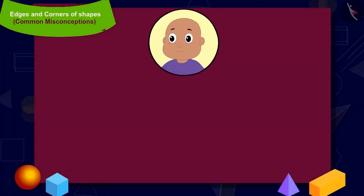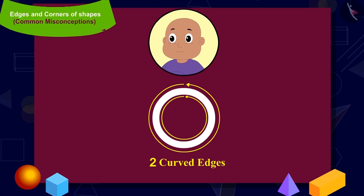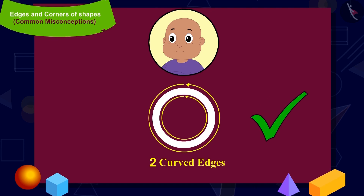Let us have a look at Bablu's shape. Can you look out for the edges in Bablu's shape? These are the two curved edges in Bablu's shape. Can you look for the corners in this shape? In Bablu's shape, the curved edges can never meet. That is why Bablu's shape has no corners. So is Bablu's shape correct? Yes, Bablu's shape is absolutely correct.